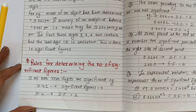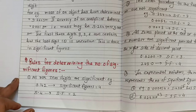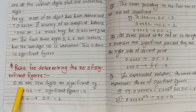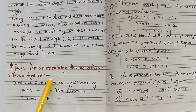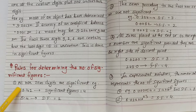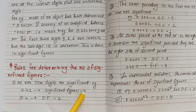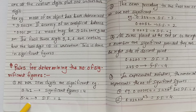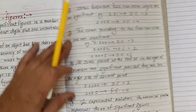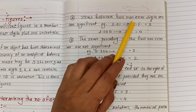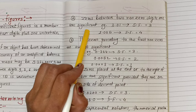Whenever you are determining significant figures, there are some rules. I will explain them one by one. The first rule is that all non-zero digits are significant. For example, 3.142 — you can see that these are all non-zero, so all are significant figures. There are 4 significant figures here, which are all non-zero digits.